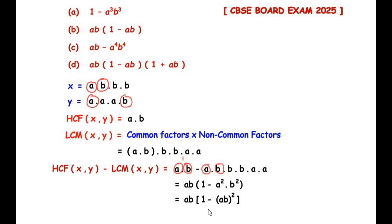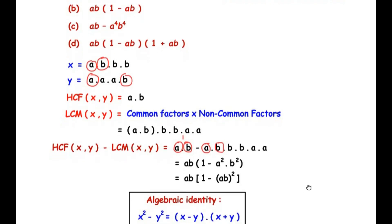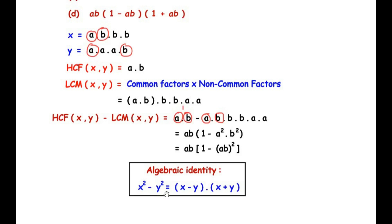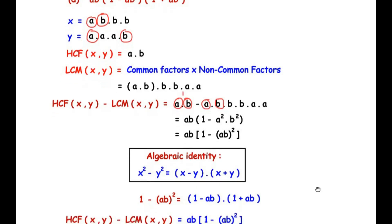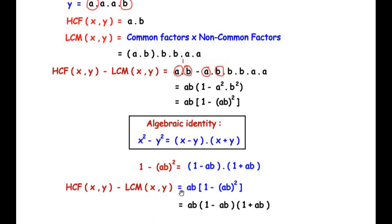The algebraic identity we are going to use is x squared minus y squared, which expands as (x minus y)(x plus y). Here, x squared represents 1 squared, which equals 1, and y represents ab. So 1 minus (ab) squared equals (1 minus ab)(1 plus ab). Therefore, HCF minus LCM of x and y equals ab times (1 minus ab)(1 plus ab). Let us check if this is in the options above.